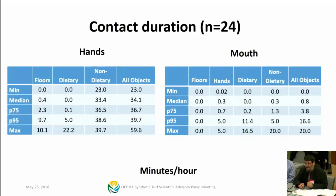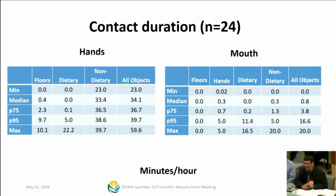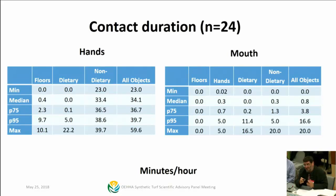Another piece that the folks at Arizona have pioneered is looking not just at contact, but also duration. For some kids, with their hands, they have relatively little contact with food because they're not eating — but then up around 22 minutes per hour at the maximum. That's the kid hanging on to a snack, keeping it in their hands for a long time, putting it in their mouth and sucking on it. We have a range of information on hand-to-object, hand-to-mouth contact, and how children interact with their environment with their mouth.